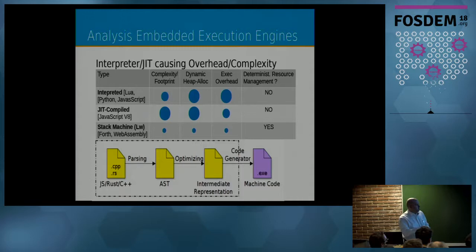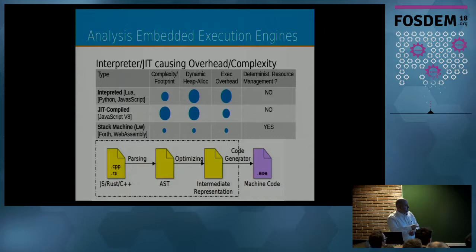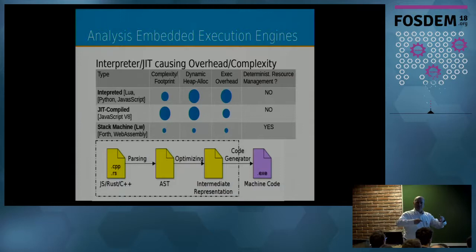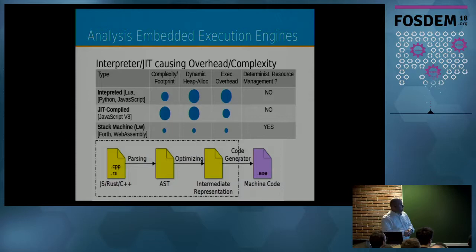With those interpreters, there is always high complexity and dynamic heap allocation involved — we can't get out of it. There's an execution overhead, and with JavaScript via V8 there's even higher complexity because it's JIT-compiling everything during startup. The benefit is lower execution overhead during runtime, but none of these really allow deterministic resource management. They all bring in a garbage collector and destroy the benefits of the Rust environment.